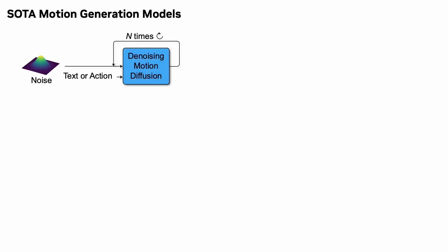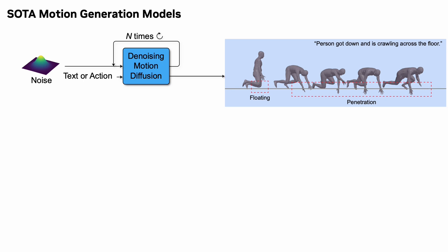State-of-the-art human motion generation models use denoising diffusion directly to map noise and conditional information such as text or action labels to human motion. However, since the diffusion process disregards the laws of physics, the motions they generate can have pronounced artifacts such as foot sliding, floating, and ground penetration as highlighted here.